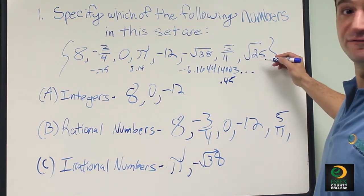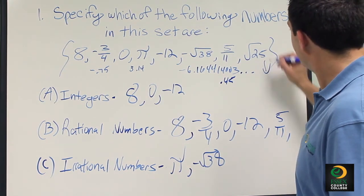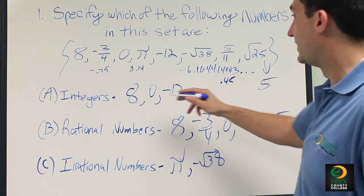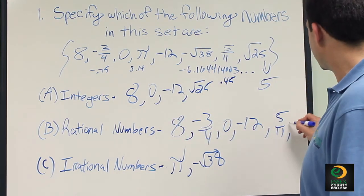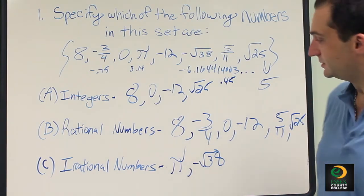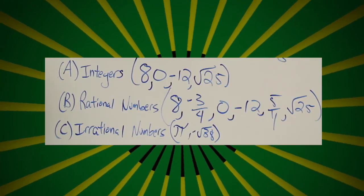And finally, the square root of 25, if you were to do that math, it's equal to 5. So that 5 is an integer, and it's also a rational number because it terminates.